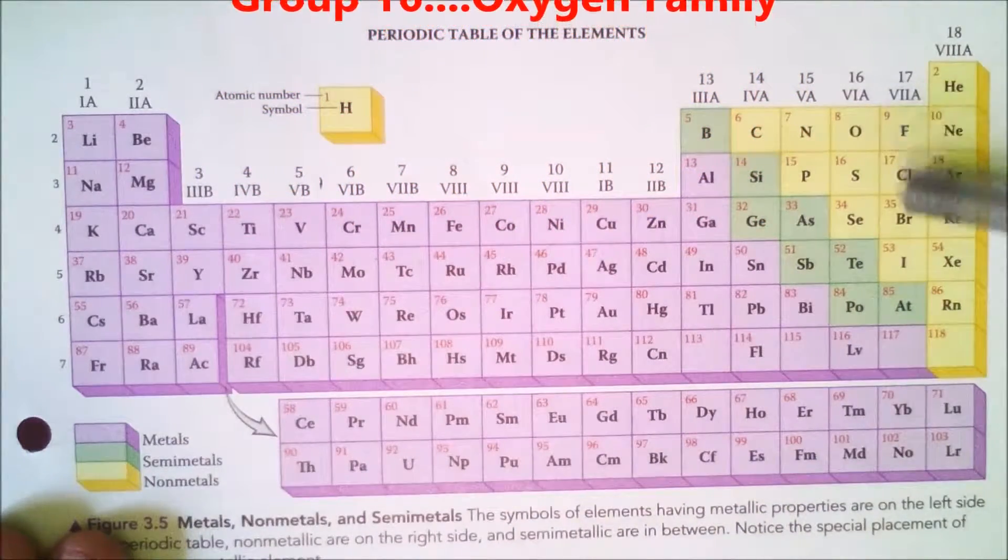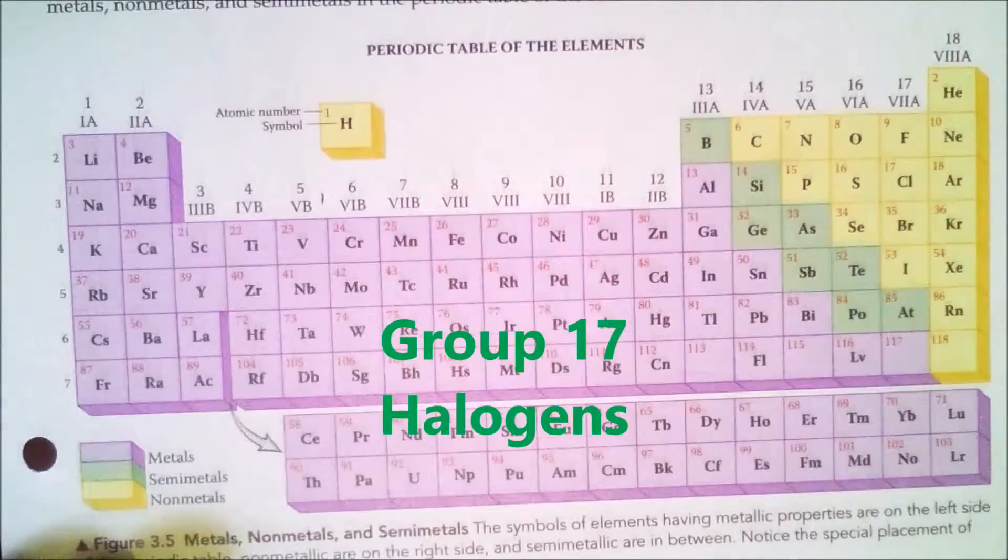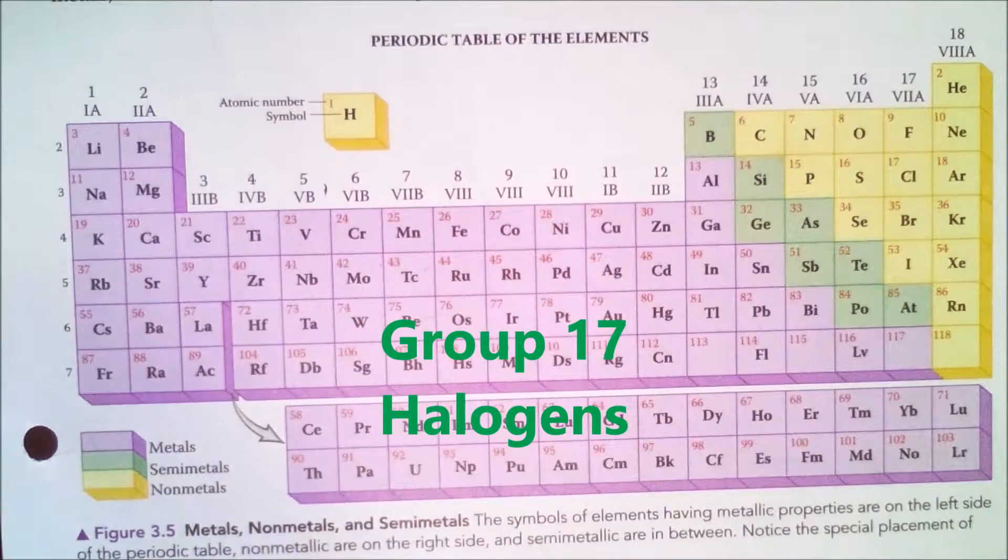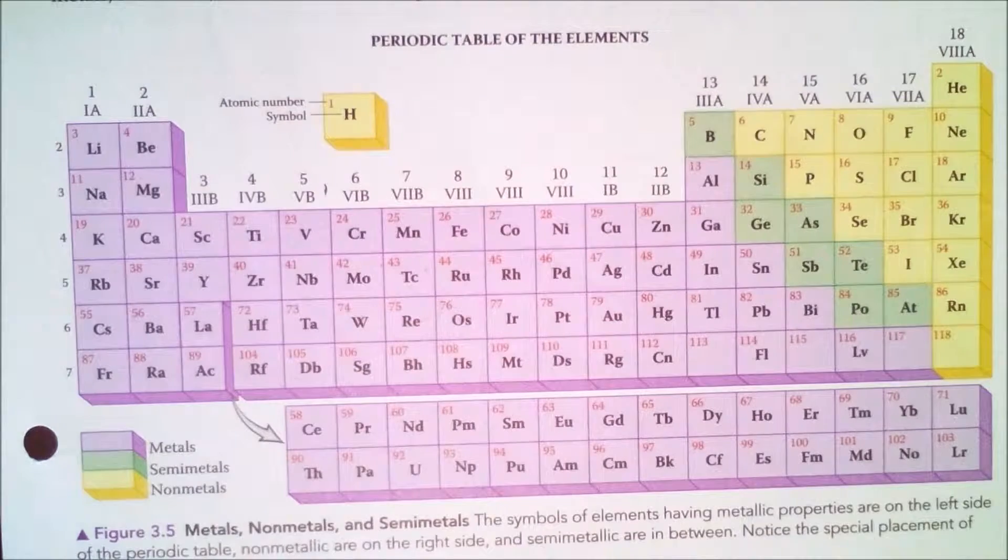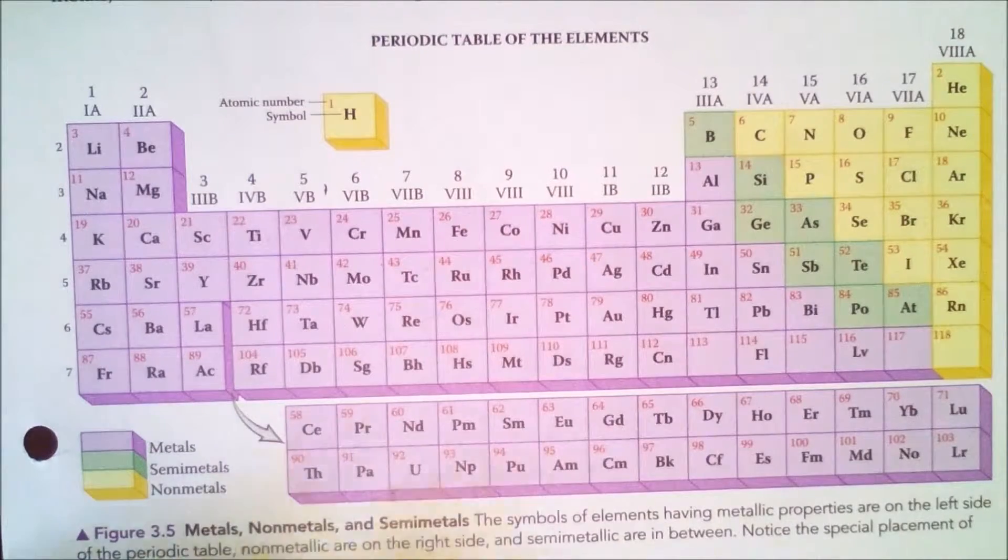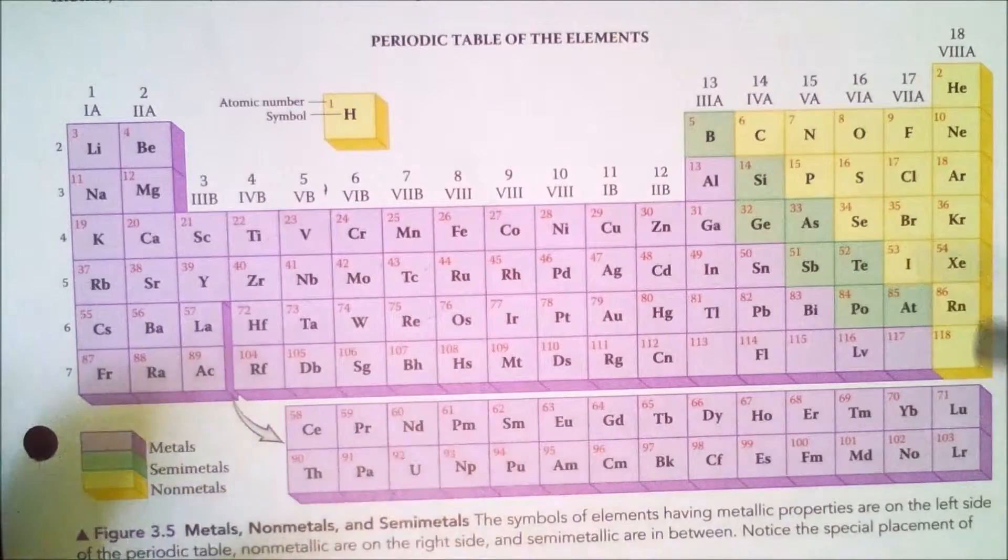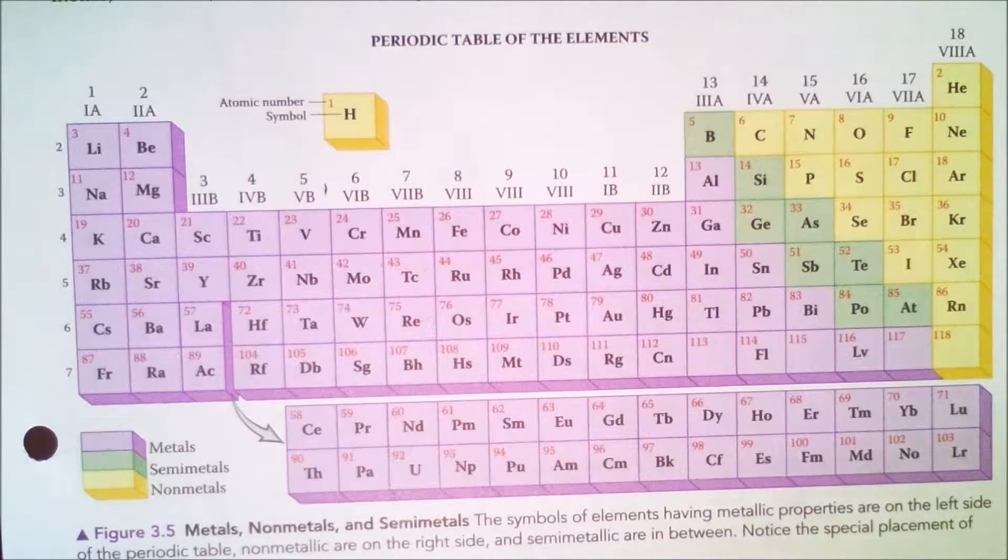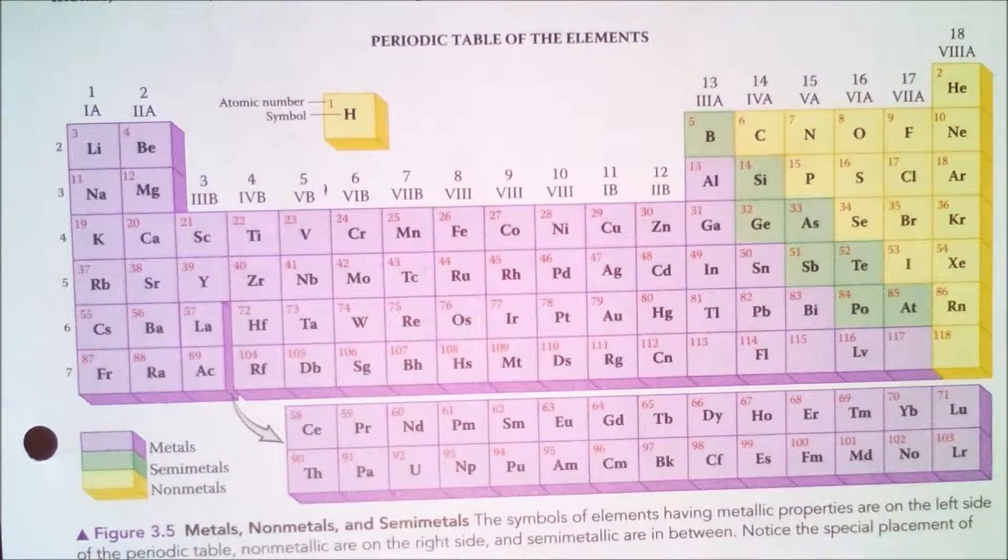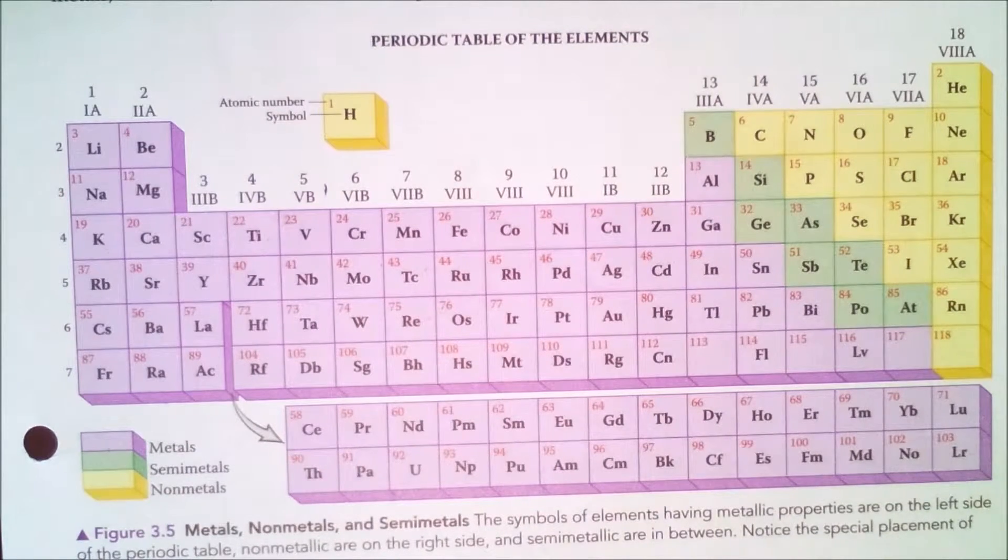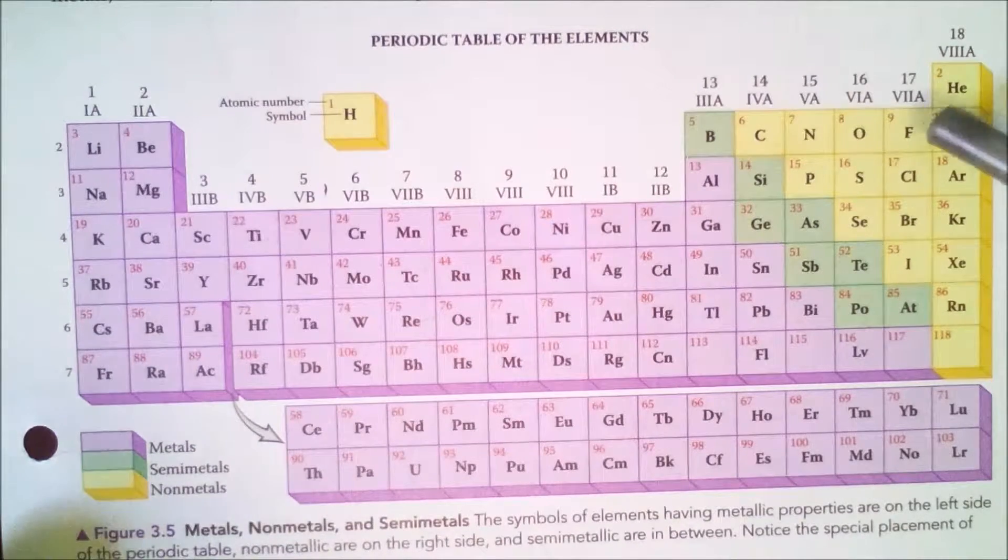Now, when we get to group 17, this group right here is called the halogens. The halogens is named that because of the characteristic traits that they exhibited. This particular group has some overrated elements, including fluorine. There you have chlorine, which you know is often associated with the swimming pool. But you also may have heard of iodine. You need iodine in your diet because it helps to prevent goiters. You may see that in various countries where they lack iodine supplementation. They'll have these big goiters that look like lumps in their throats.